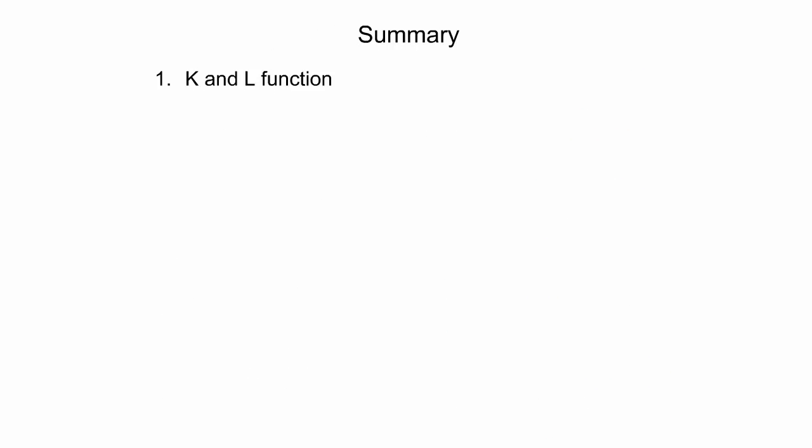This slide summarizes the presentation. It began by illustrating how the shape of the K and L function can be used to describe the structure of a point pattern in a more detailed way than nearest neighbor-based methods. The presentation then explained the principle of the edge effect and illustrated how it can bias results of the K and L function. Finally, Monte Carlo simulation was used as a means to generate simulated confidence envelopes, which allowed the determination of whether a point pattern is significantly clustered or dispersed at a given distance.